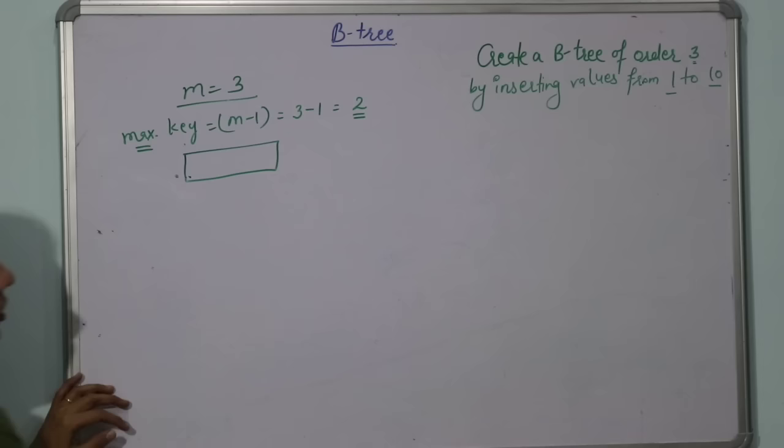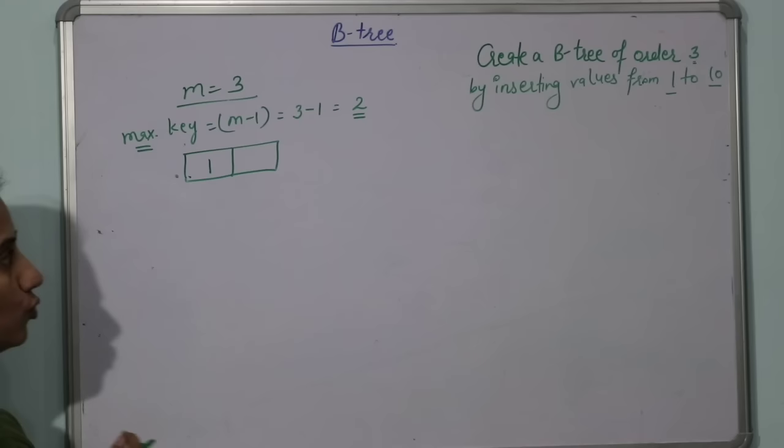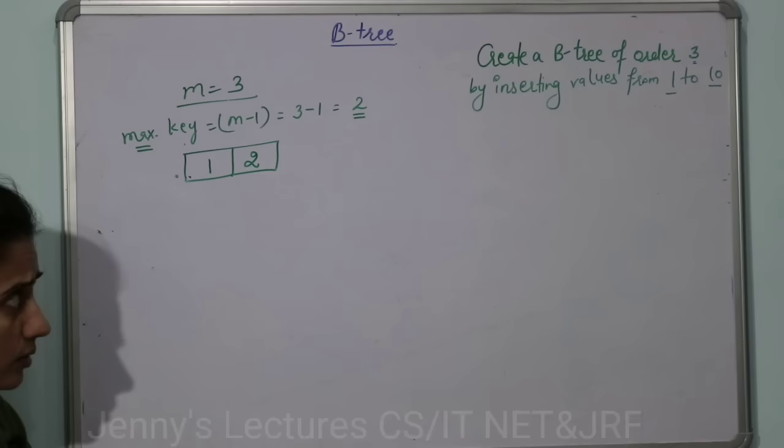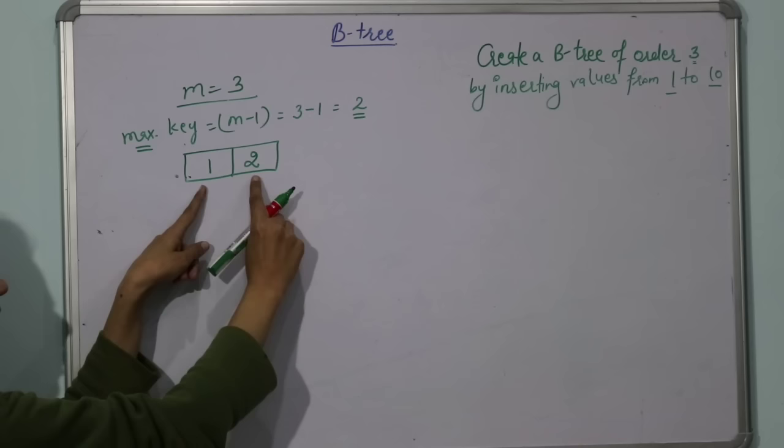So maximum keys would be 2: key 1 and key 2. Now 1 is first inserted, after that 2 would be inserted. And see one more point, these values are always inserted in sorted order.